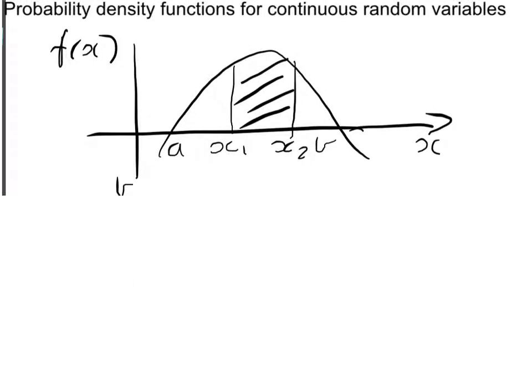Now suppose I want to find the probability that a particular value of x is between two known values of x, x1 and x2. That will be the area represented by the shaded area in the diagram.